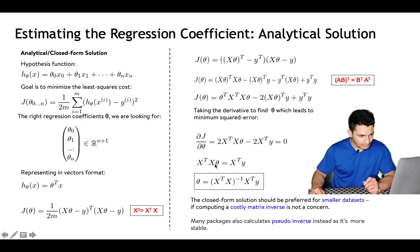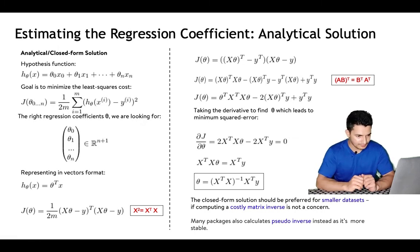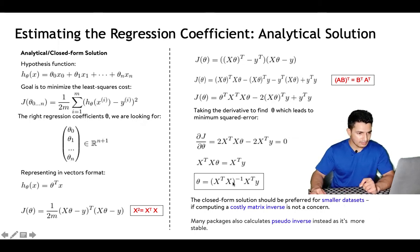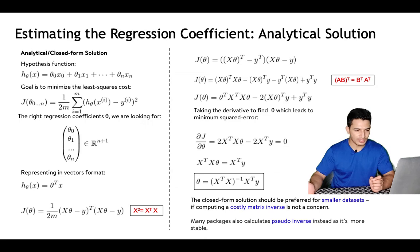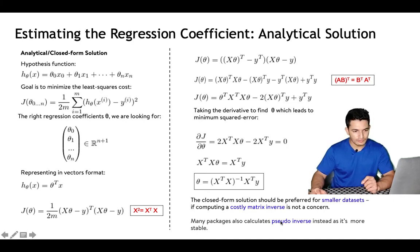Moving terms across and taking the matrix inverse, we get the normal equation: θ = (XᵀX)⁻¹Xᵀy. This θ minimizes the loss function. This analytical solution should be used on smaller datasets, because finding the inverse of a matrix is computationally costly and sometimes the inverse may not exist when the determinant is zero. Many packages use a pseudo-inverse for more stability.